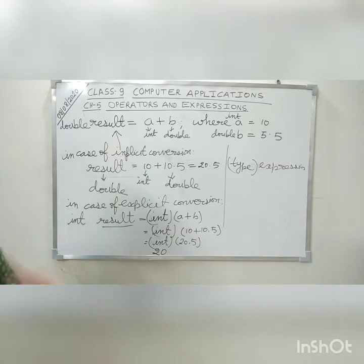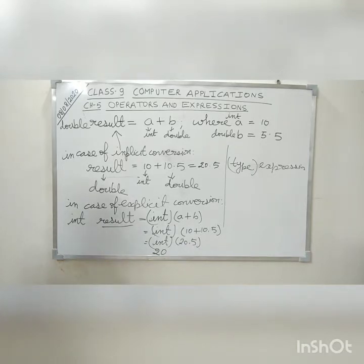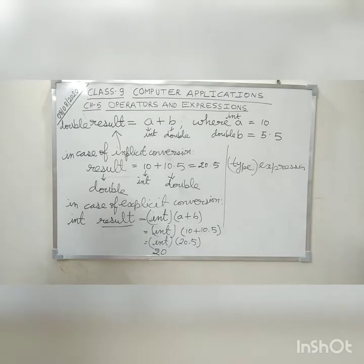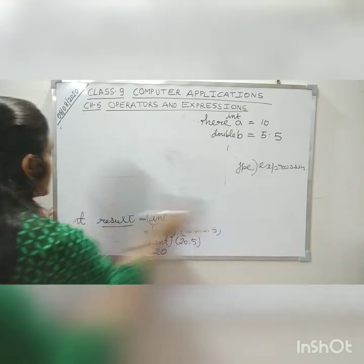In implicit conversion, the user has no need to worry about the conversion — it is automatically done by the compiler. In explicit conversion, the benefit is that if you want the output of any expression in a particular data type, you can specify it. But explicit conversion also has some demerits: if you are converting from a higher data type to a lower data type, it can cause a loss of data, as I explained in my last Zoom class.